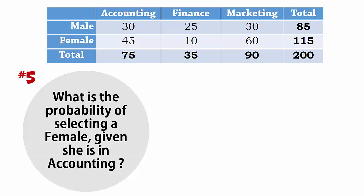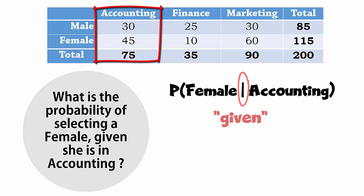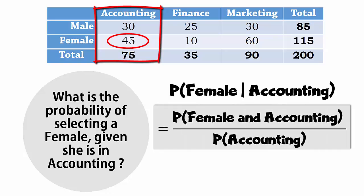Number 5: What is the probability of selecting a female given she is an accountant? We write this as P of female given accounting. The vertical line here represents the word 'given' — that is, out of the accounting students, what proportion is female? Using the conditional probability formula, we write P of female and accounting divided by P of accounting, which gives 45 over 75 or 0.6.